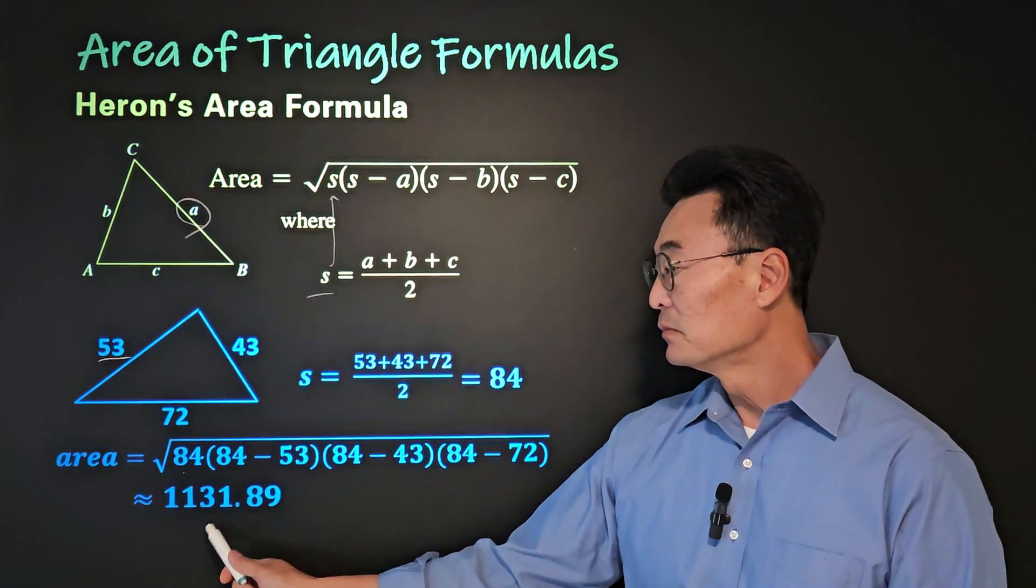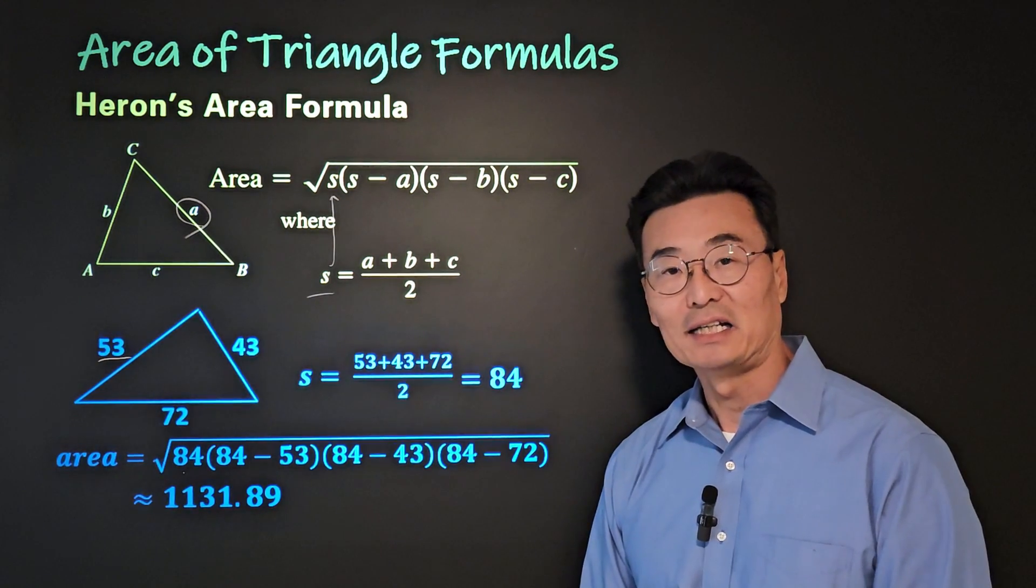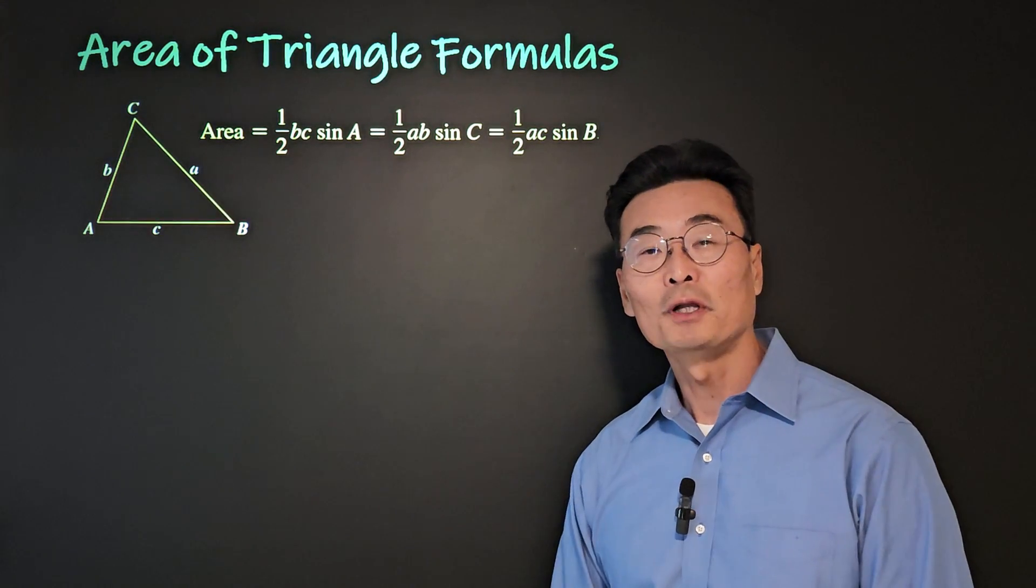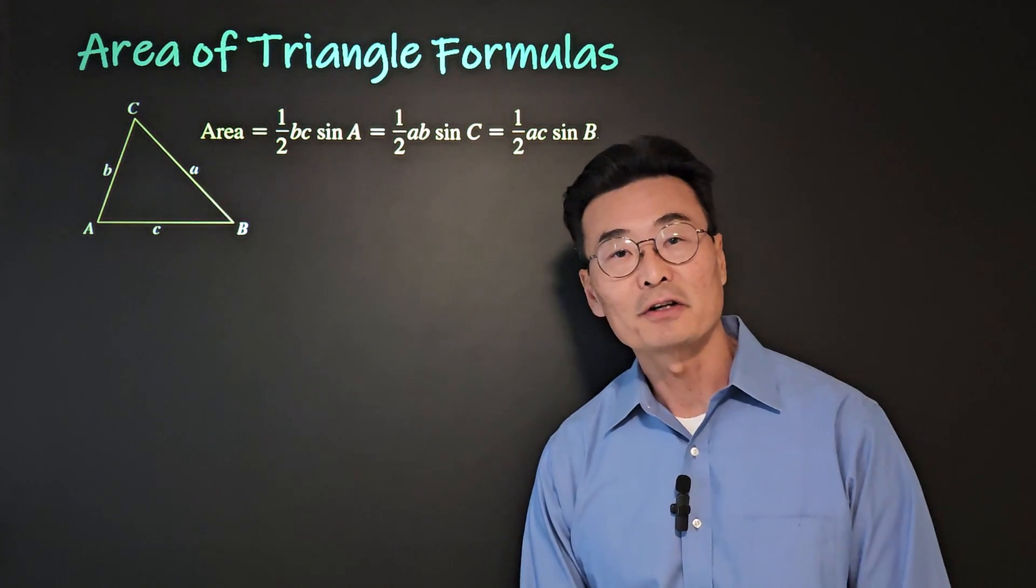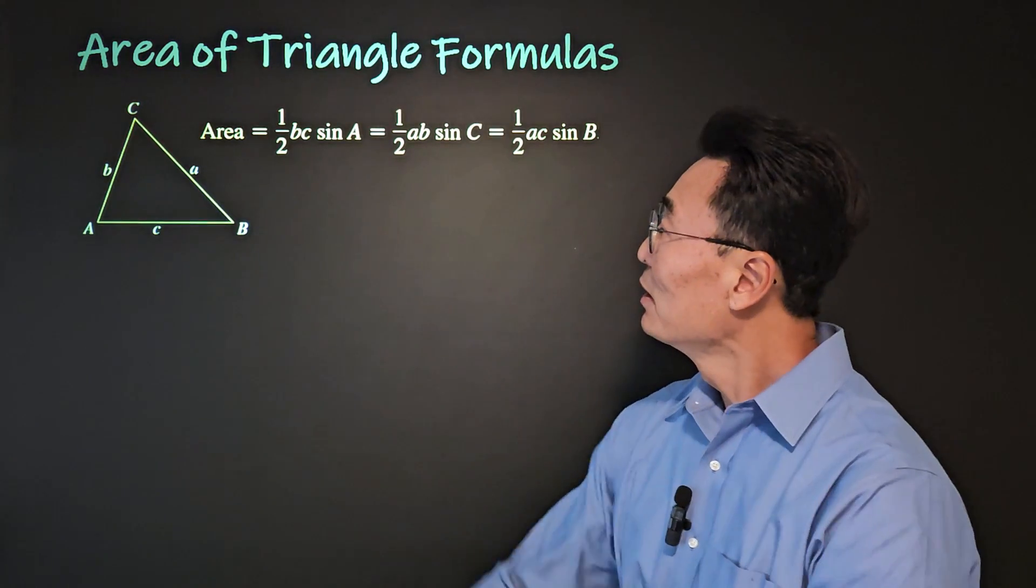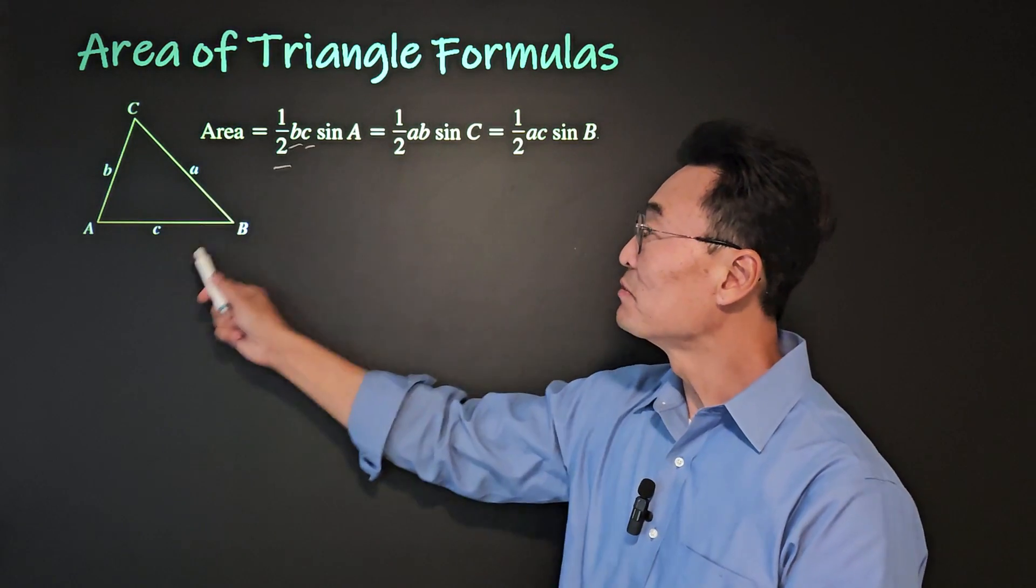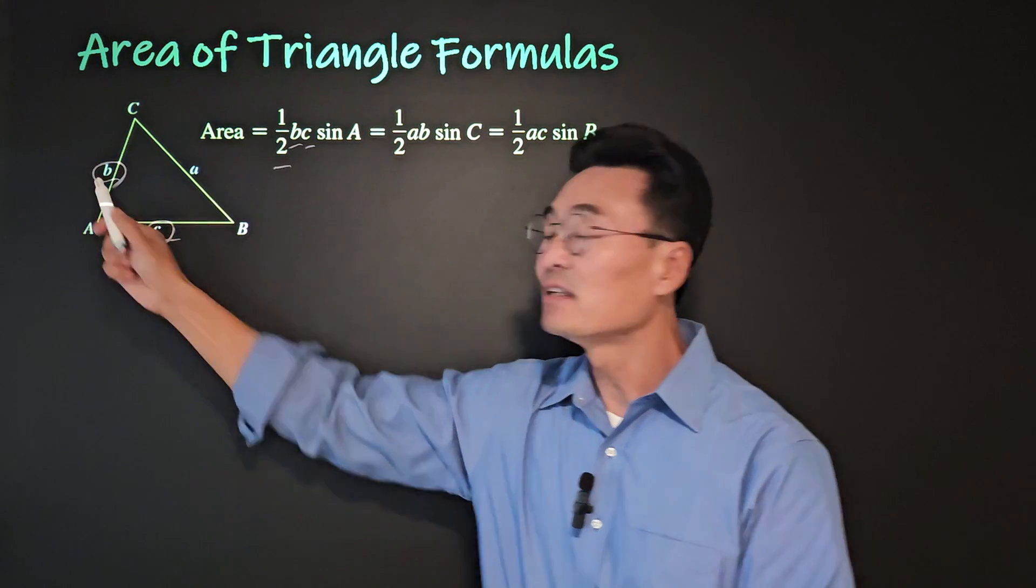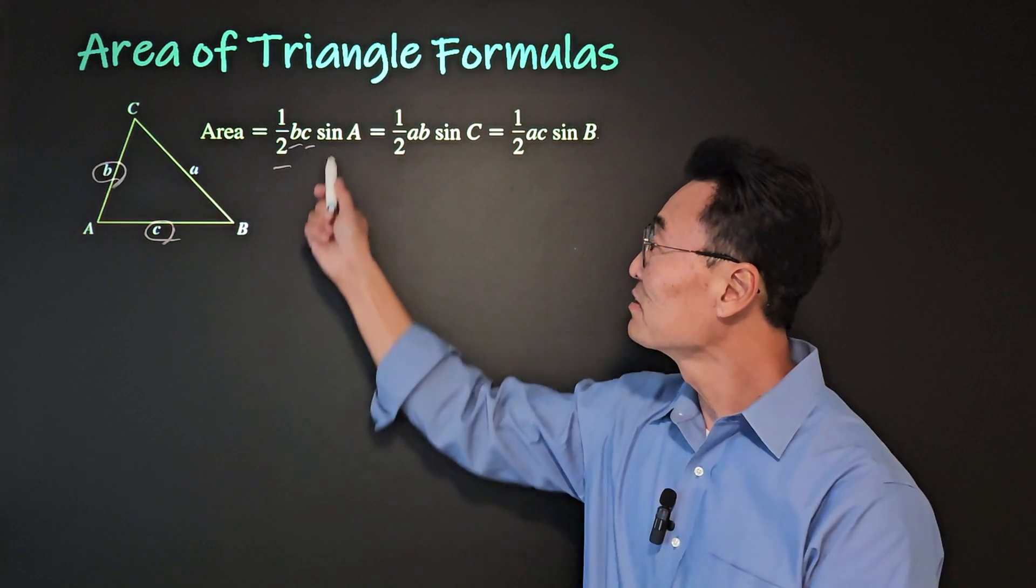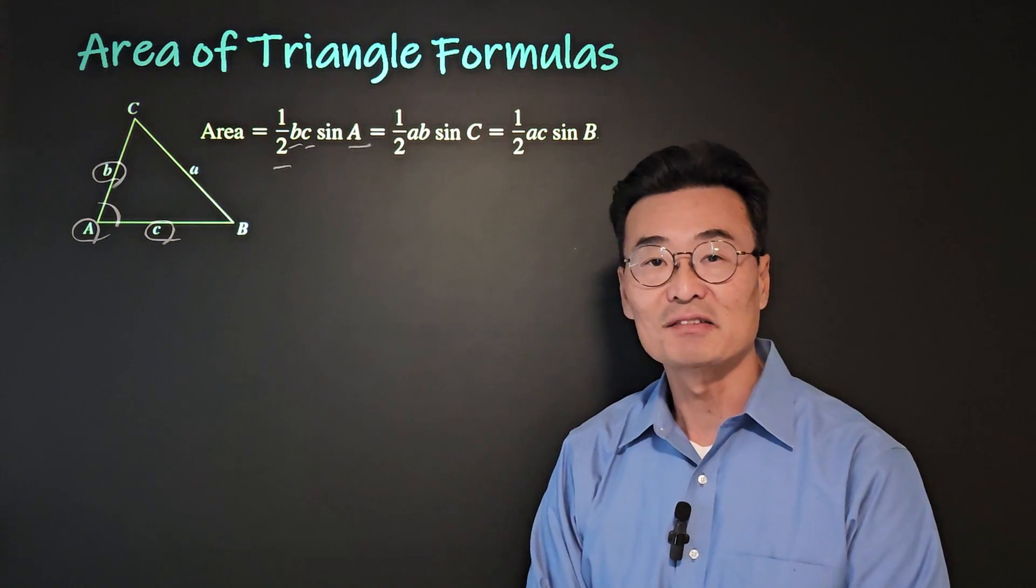Here's the second formula that you could use to find the area of a triangle, again, if it's not a right triangle. So first, you take the half of b times c, meaning the two sides of a triangle, times sine of the angle that's in between the two sides given.